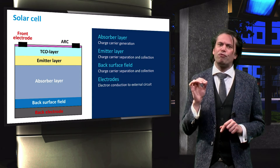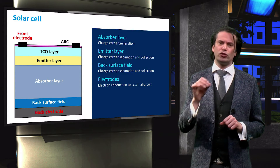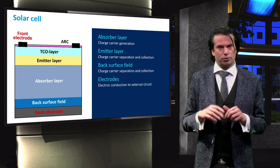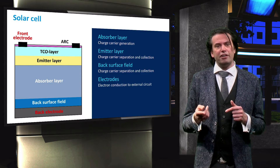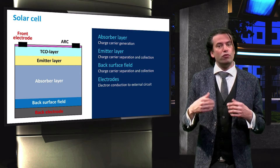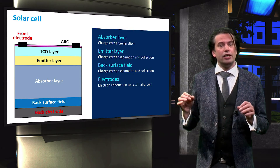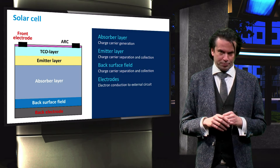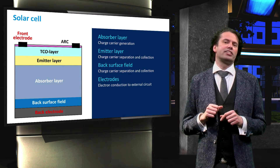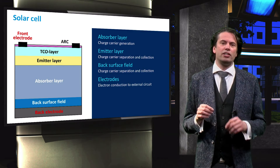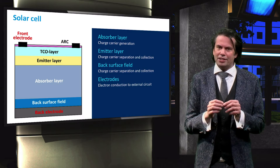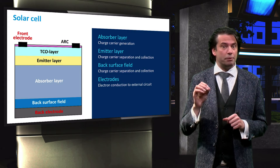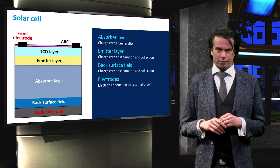Only a small fraction of the front surface is covered by electrodes. Charge carriers therefore have to move laterally to the front electrode. In a high-quality crystalline silicon solar cell, this lateral charge carrier movement takes place in the emitter layer.